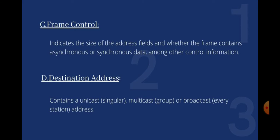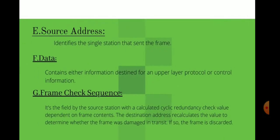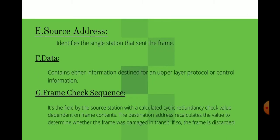Frame Control (FC) is a 1-byte field that specifies whether this is a data frame or a control frame. Destination Address (DA) contains the destination address. Source Address (SA) identifies the single station that sent the frame and contains the address of the sender. The PDU, or Protocol Data Unit, is a variable-length field containing either information for an upper-layer protocol or control information.